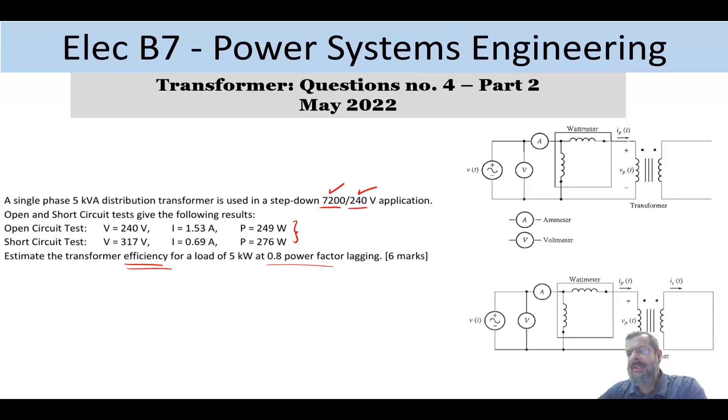And in most of the examples, this is what you'll notice. And in this example, you see that the voltage that is applied, the rated voltage, is the 240. So these tests will lead to getting the parameters referred basically to the low voltage side or to the secondary.